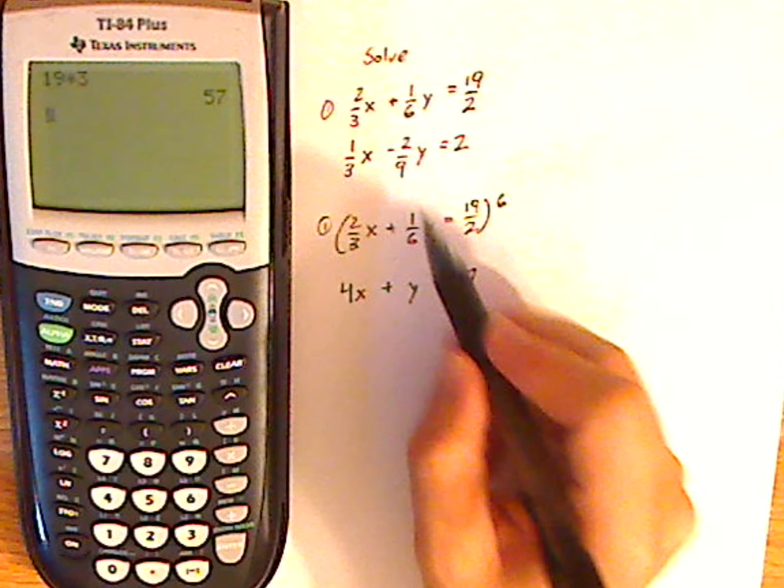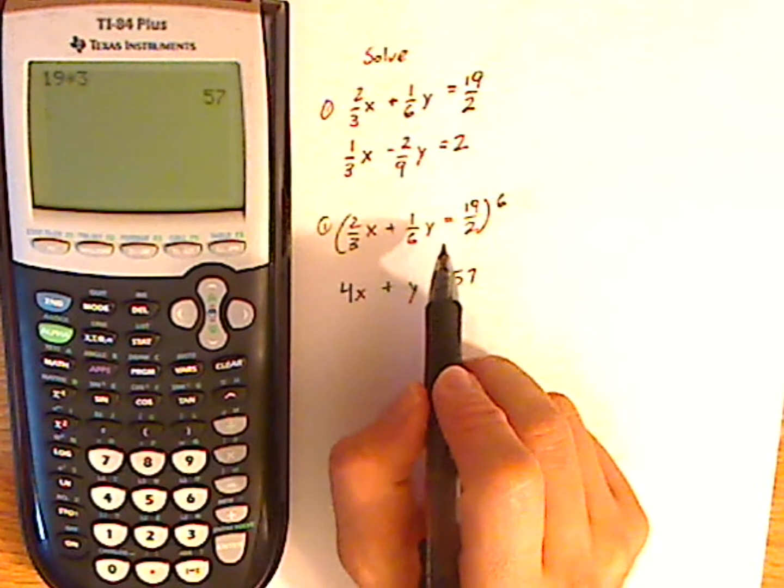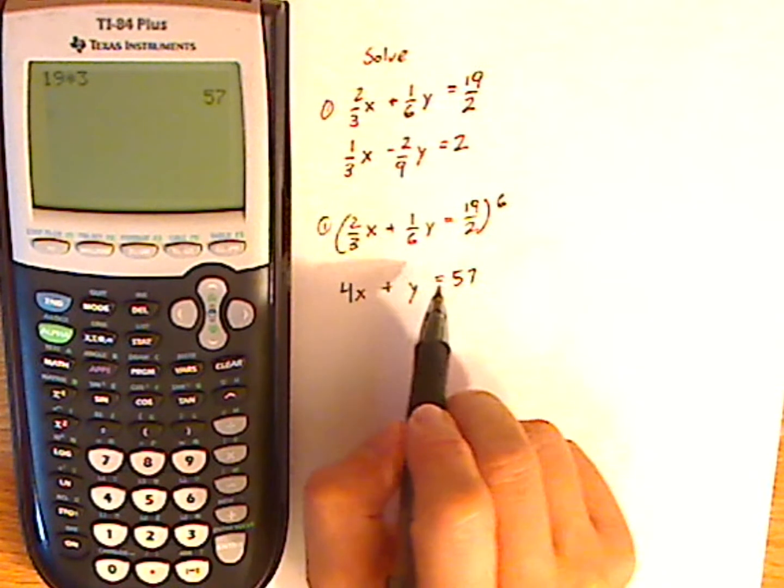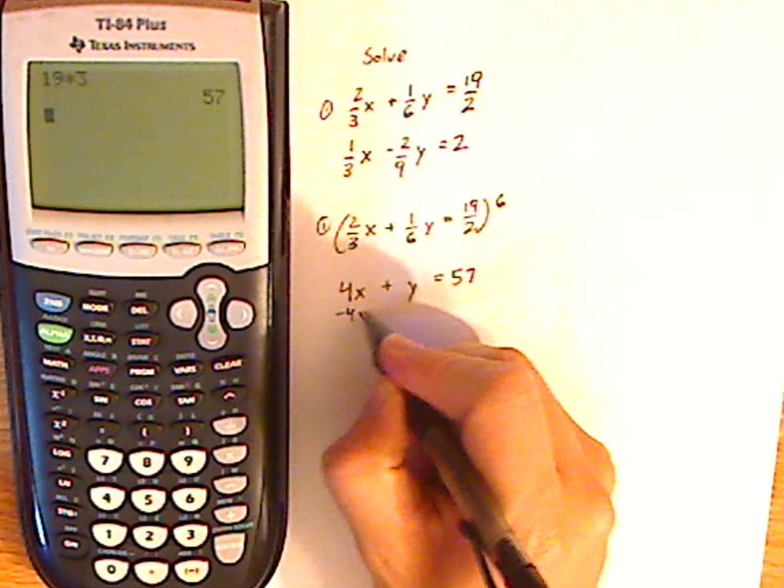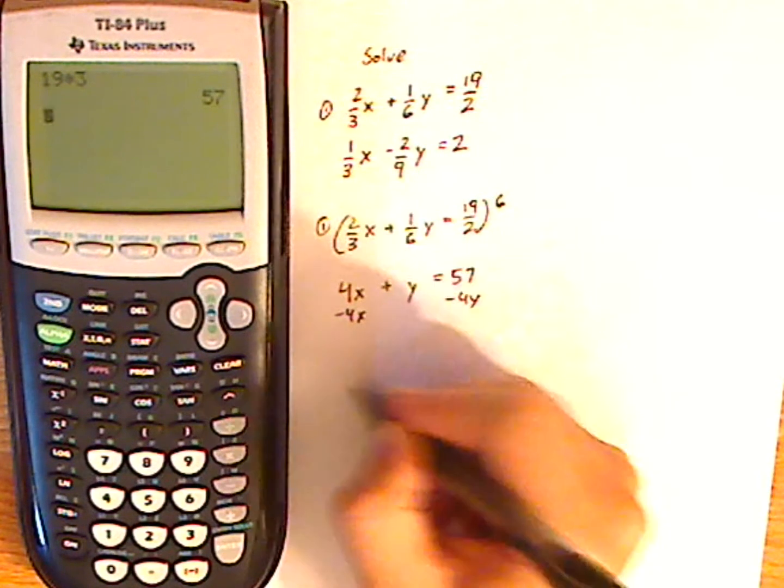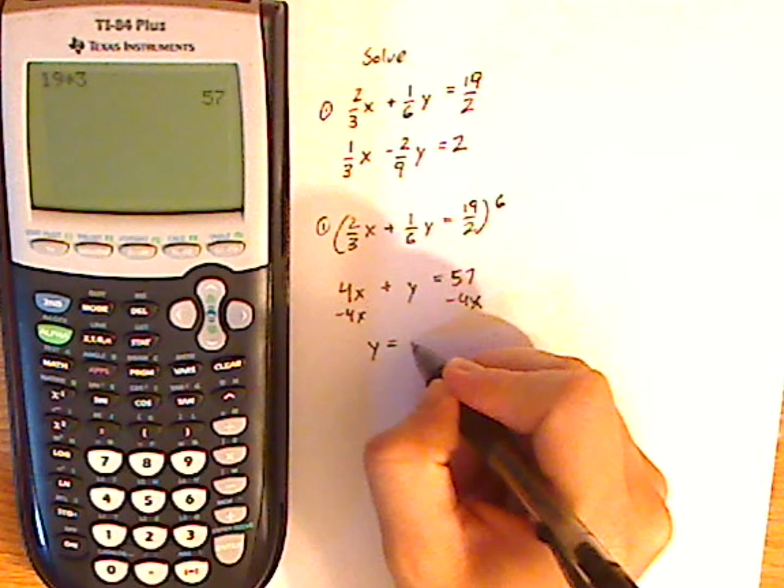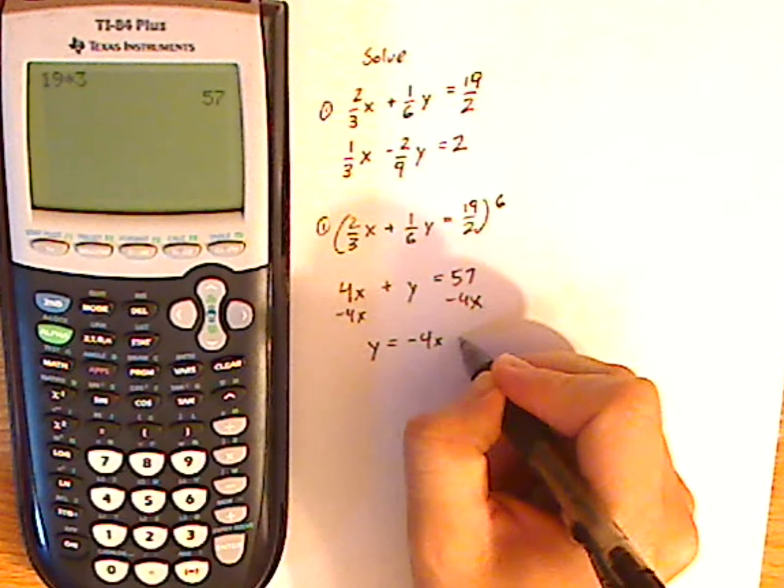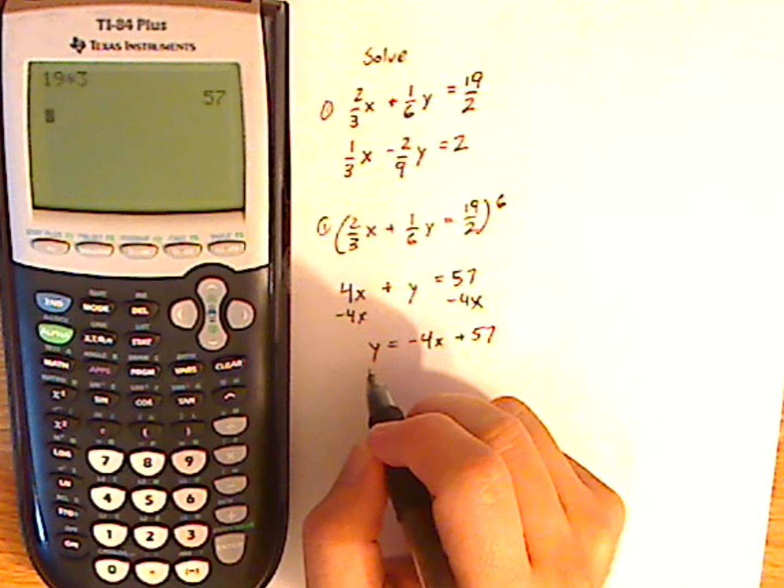So then what I do next, that's just to get rid of the denominators so it's easier to work with. Now you just want to solve for y. So here I just subtract both sides by 4x, so that gives me y = -4x + 57 for my first equation.